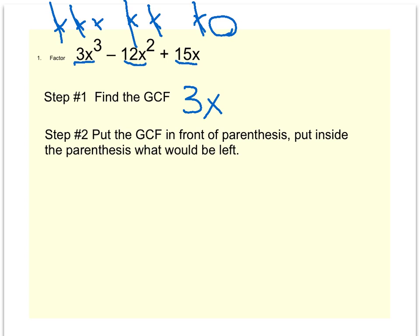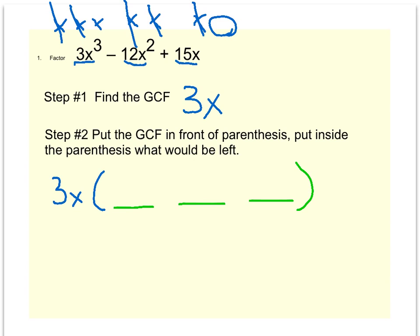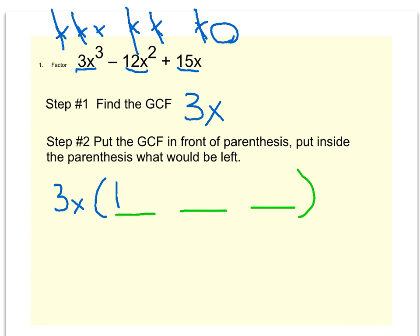Step two: put the GCF in front of the parentheses — so 3x in front of parentheses — then put inside what would be left. We started with three terms, so we need three slots or placeholders. Three times what gets me back to three? Three times one. And since we have one x here, we need x squared inside to get back to x to the third, because two plus one gets you back to three.